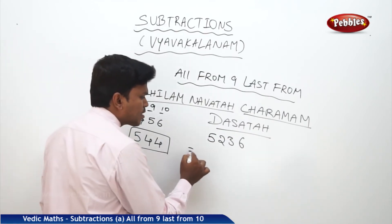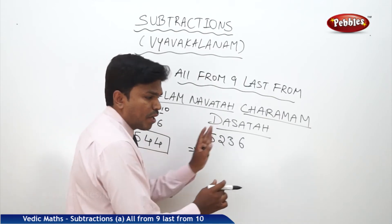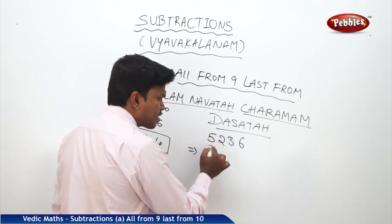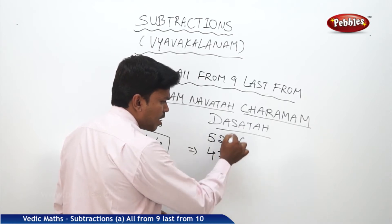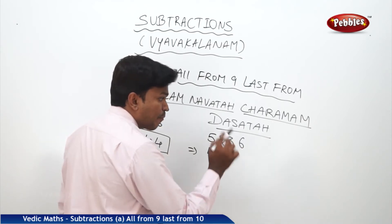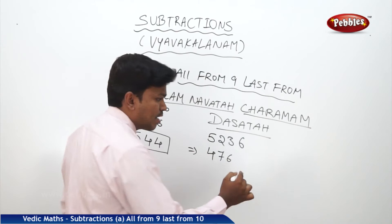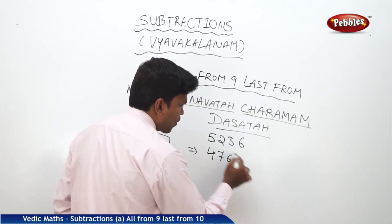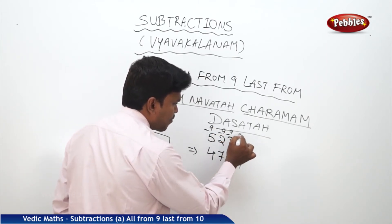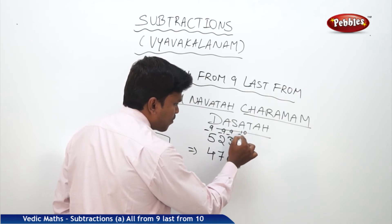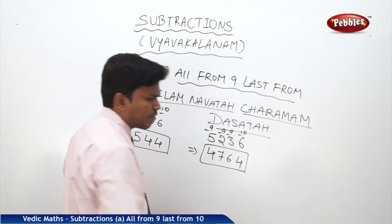For 5236, subtract every number from nine starting from the left: nine minus five is four, nine minus two is seven, nine minus three is six. But the last number from ten: ten minus six is four. So the answer is 4764.